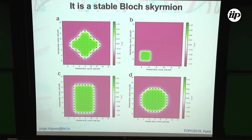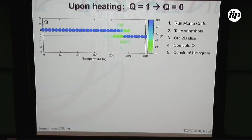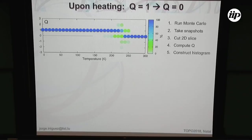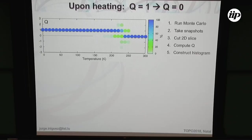We have a model and we can heat up the system to see what happens. We take a supercell — something like 20×20 in the plane and 10 unit cells in height — write the nanodomain, and heat from zero Kelvin up to room temperature. In this temperature range, the nanodomain is perfectly metastable — it doesn't go away. We run Monte Carlo at each temperature, take many snapshots, take a slice featuring our nanodomain, compute the topological charge Q from each slice, and construct a histogram as a function of temperature.